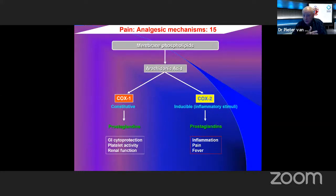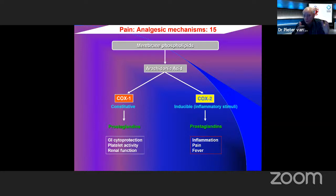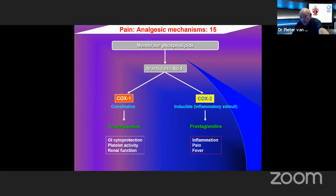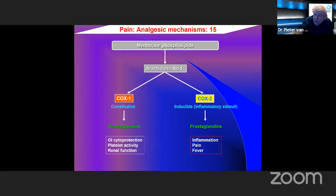Looking more closely at the arachidonic acid pathways: COX-1 (cyclooxygenase-1) is the constitutive pathway, forming prostaglandins that produce gastrointestinal cytoprotection, platelet activity, and renal function — that's their normal function. COX-2 is the inducible enzyme, acting on inflammatory stimuli to produce prostaglandins causing inflammation, pain, and fever.